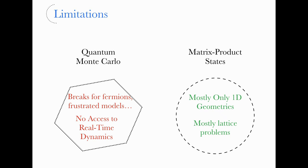On the other hand, matrix product states and tensor networks in general are very efficient and extremely powerful at studying one-dimensional lattice geometries. When you apply them to other systems, for example in continuous space or in two dimensions, there are difficulties that emerge numerically, and the efficiency of these approaches is much reduced with respect to the one-dimensional case. So it's clear that it would be desirable to have some new approach — some alternative technique.